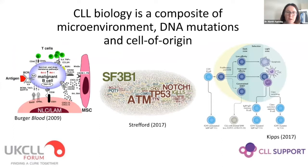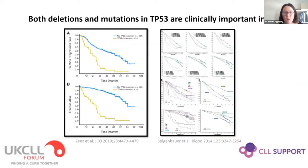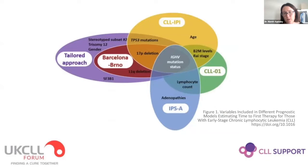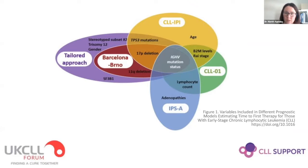CLL biology is a composite of interactions between the tumour cell and its microenvironment, functional consequences of somatic mutations in the tumour cells, and the cell of origin of CLL — particularly the status of the immunoglobulin mutation and heavy chain gene rearrangement. In a clinical context, deletions and mutations in TP53 are important for prognostication and treatment selection. We also rely on the key role of immunoglobulin mutation status, which divides CLL into two broad subgroups based on homology to the germline, and sits centrally in many CLL prognostic scores.